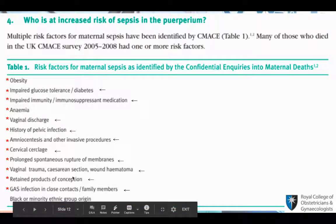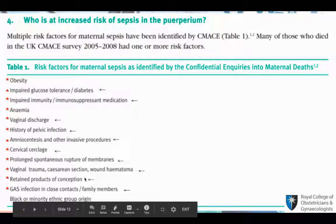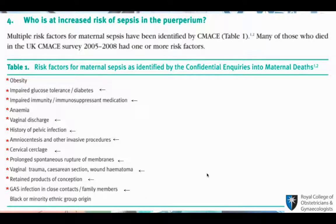Other risk factors include vaginal trauma, cesarean section, wound hematoma — basically any breakage of the skin increases risk of infection. Any retained products of conception, like placenta left behind in the uterus, could lead to endometritis. Group A streptococcus infection in close contacts or family members is important — group A streptococcus is the most common pathogen for puerperal sepsis, so if any family member has a group A strep infection, they might have passed it on to the patient.